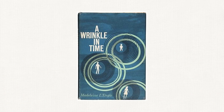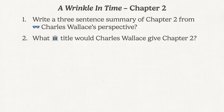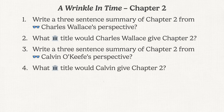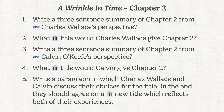Let's say we're reading A Wrinkle in Time, chapter two. First, write a three-sentence summary of this chapter from Charles Wallace's perspective. What title would Charles Wallace give this chapter? Write a three-sentence summary from Calvin O'Keefe's perspective. And what title would Calvin give the chapter? Write a paragraph in which Charles and Calvin discuss their choices for the title. In the end, they should agree on a new title which reflects both of their experiences. I've purposefully picked two characters who had drastically different experiences in this chapter.